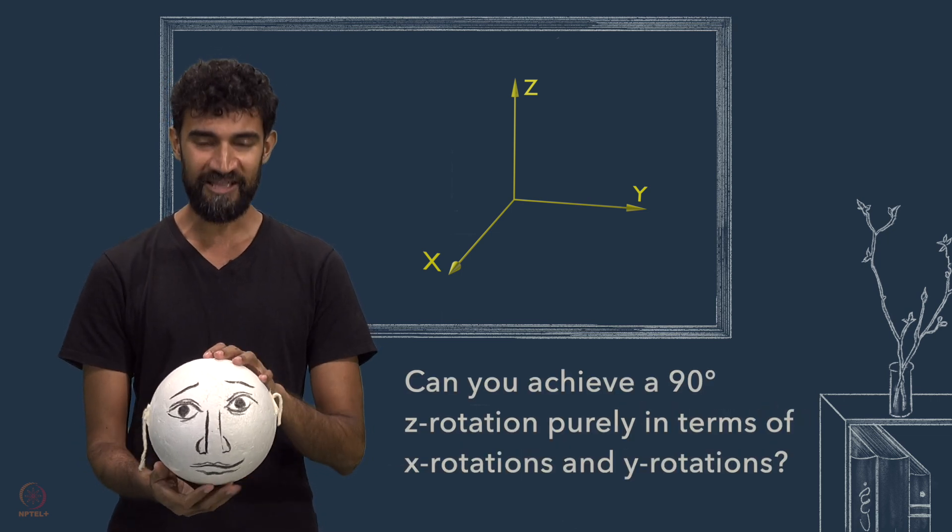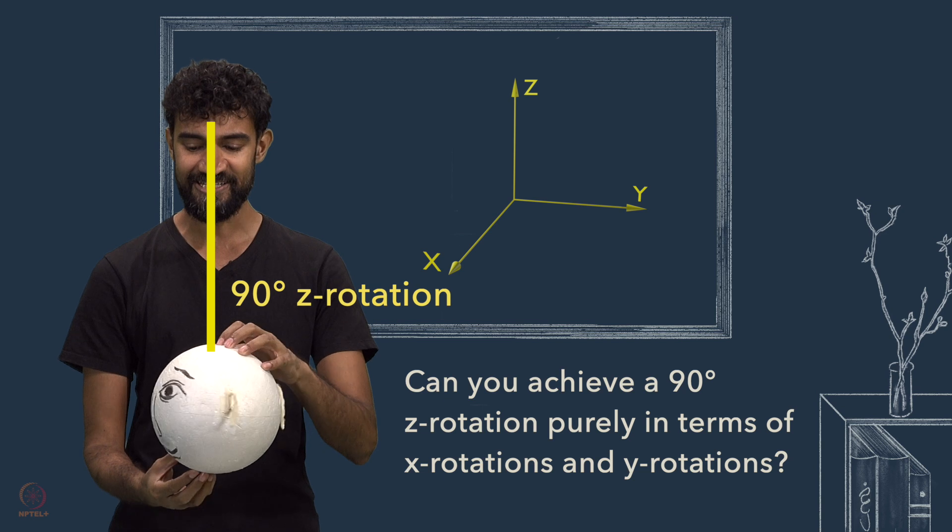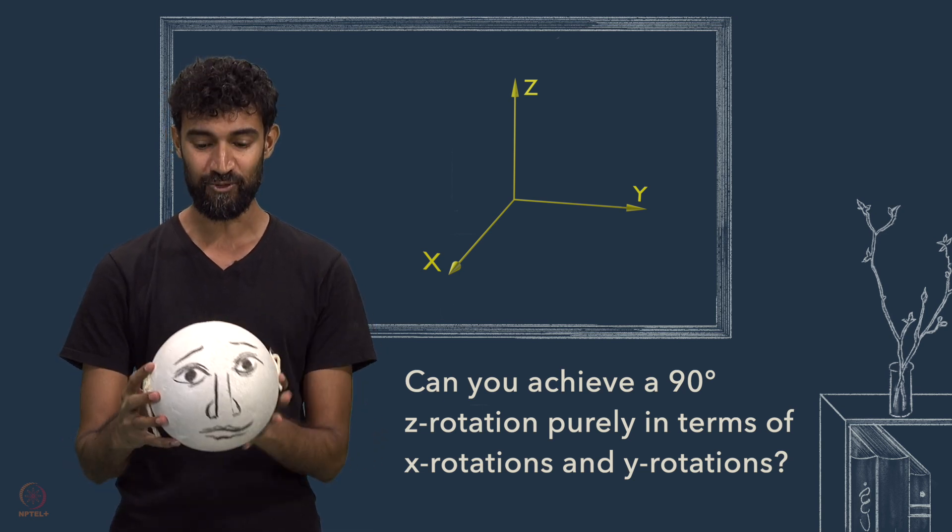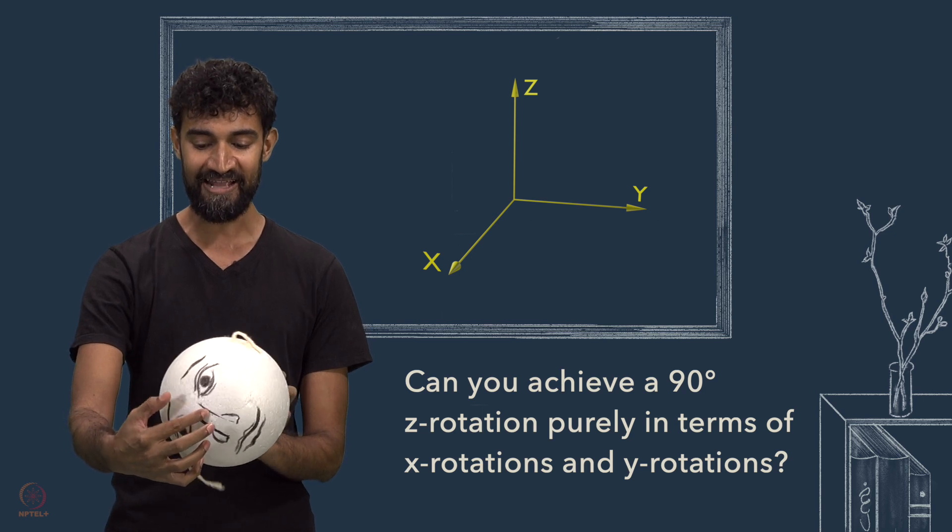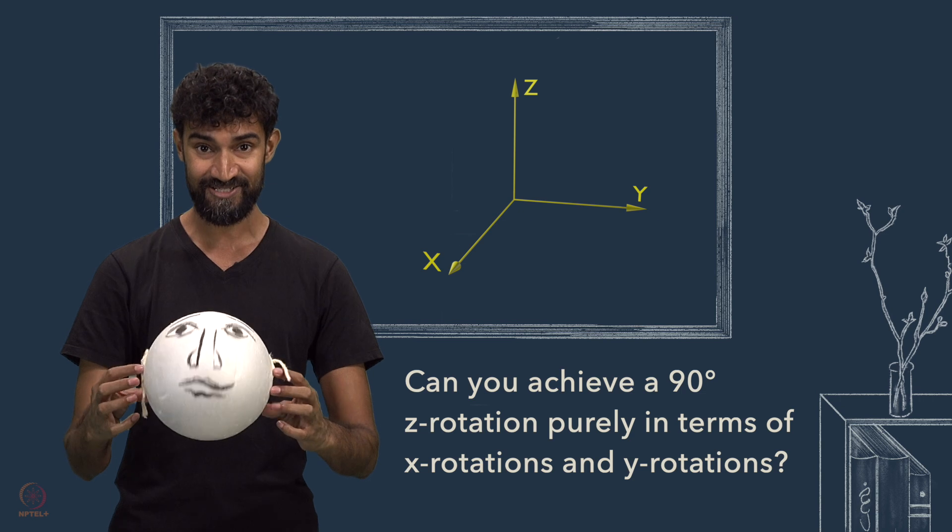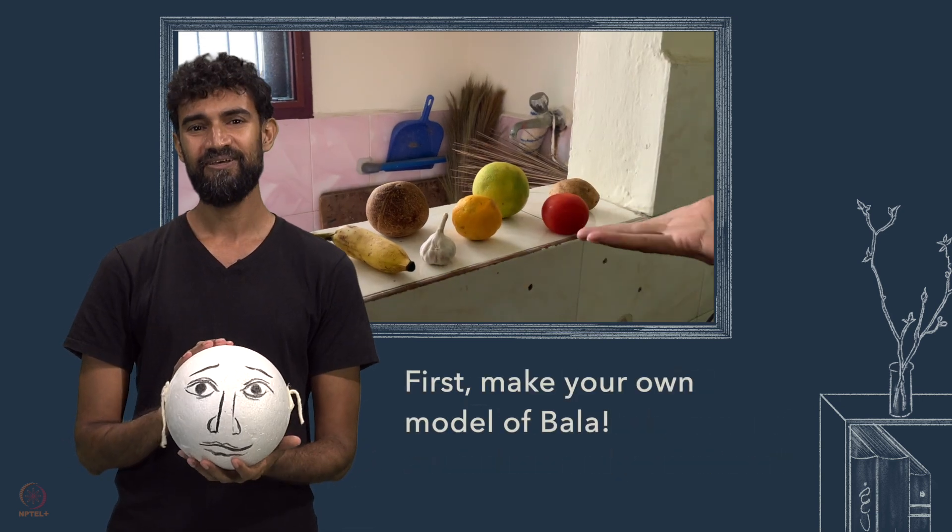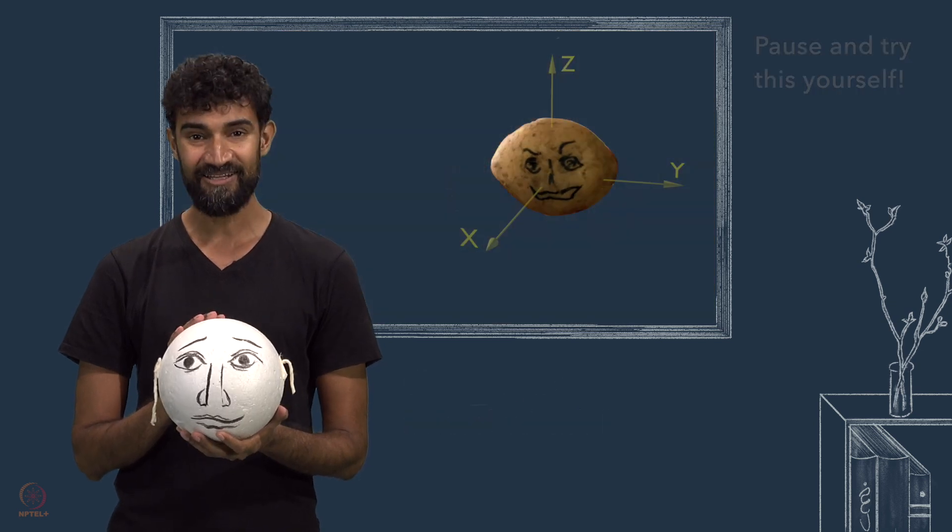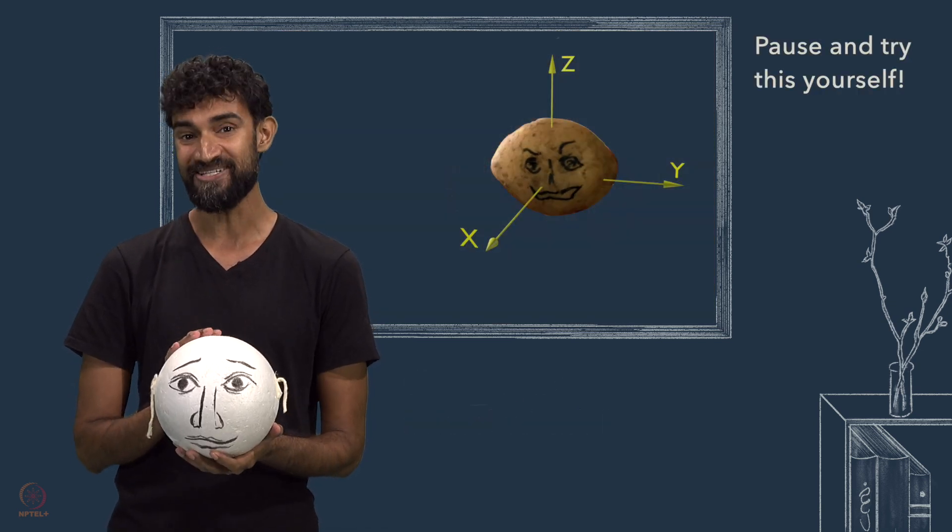Here's a puzzle. Can you find a way to achieve a 90-degree z rotation, purely in terms of rotations about the x-axis and the y-axis? First, make your own model of Bala. Then, you can pause the video and try this out yourself.